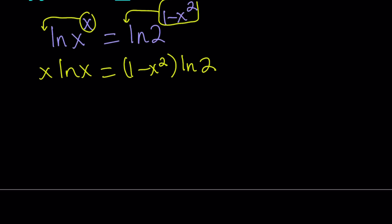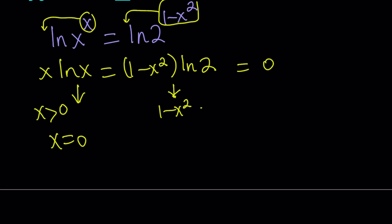You can kind of guess and check at this point. One thing you can do is set both sides equal to 0. The left-hand side says x must be positive because of ln, and in order for that product to equal 0, x must be 1 — since ln 1 equals 0. The right-hand side says in order for that to be 0, 1 minus x squared needs to be 0, which means x equals plus or minus 1.